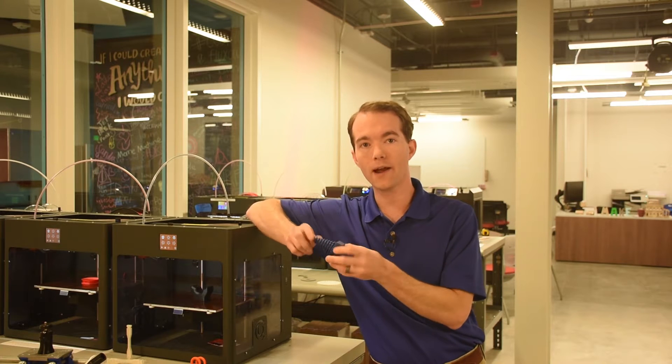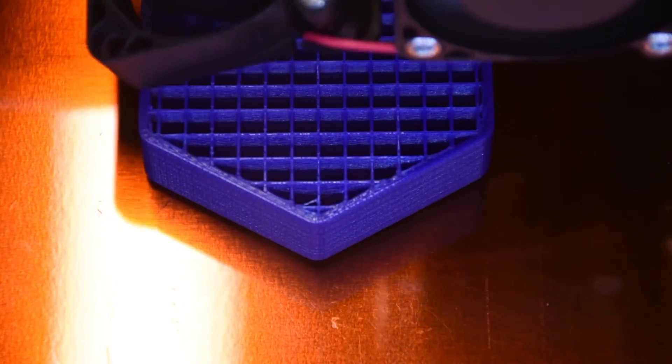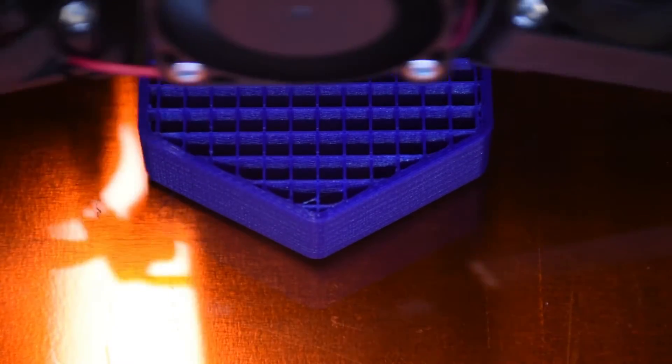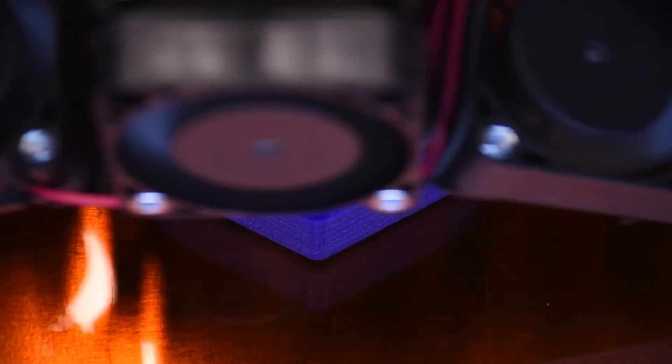The slicing software used to prepare the print only cares about the edges and faces of the model and a solid part is not built as a solid part. There is a skeleton printed inside to give the part rigidity and strength. This property is called the infill and the faces and edges are referred to as the shell.